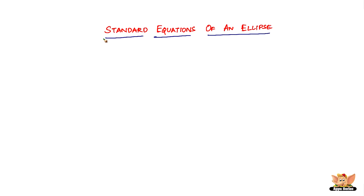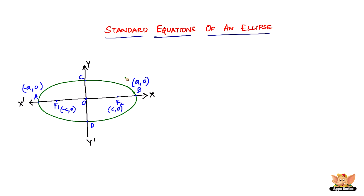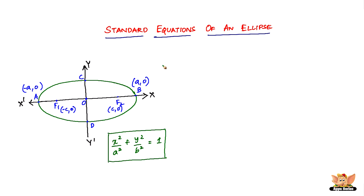In this video we are going to look into the standard equations of an ellipse. We have two equations of an ellipse and we will look into both of them. Here is the first ellipse — one of the two ways an ellipse can be drawn: horizontal and vertical. The standard equation of the horizontal ellipse is x squared divided by a squared plus y squared divided by b squared equals one.